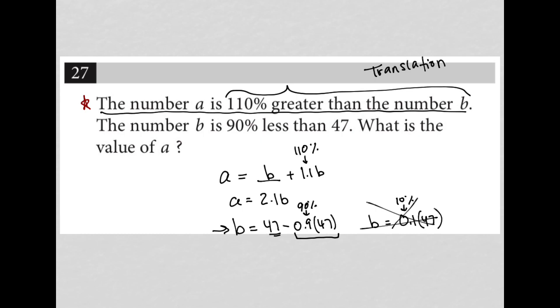The question goes on to say, what is the value of A? So let's recap. I know that A is equal to 2.1B because it's 110% greater than B. And I know that B is equal to 90% less than 47. So I have my 47, but then I'm subtracting from that 47, 90% of the 47.